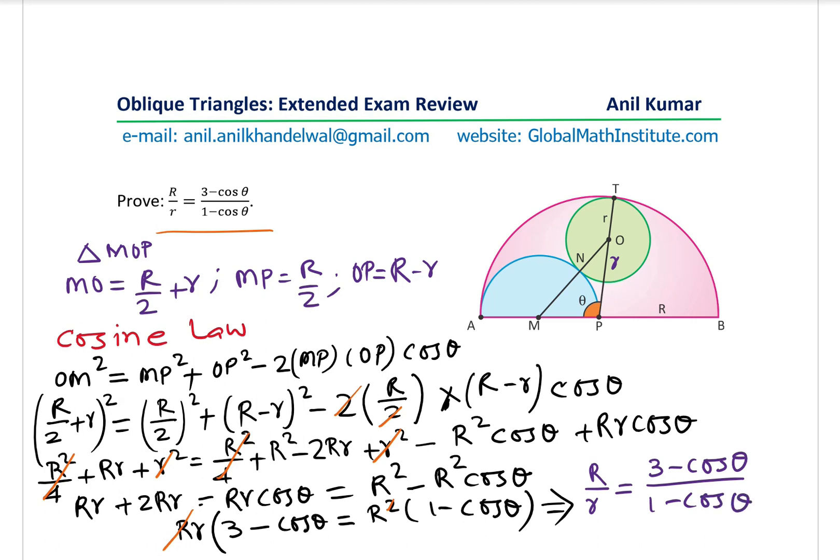So we brought r across and cross-multiplied to prove the relation. That is how you prove the identity. The key steps are: identify the triangle, apply the cosine law, find the length of each arm of triangle MOP, then solve. Now let's work with this relation to answer the next question.